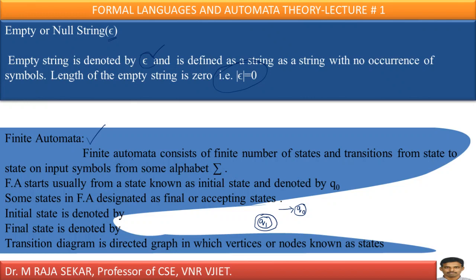Finite automata consists of a finite number of states and transitions from state to state on input symbols from some alphabet — here sigma is the input alphabet. Finite automata starts usually from a state known as the initial state, denoted by Q0. Some states in finite automata are designated as final or accepting states. An arrow pointing to Q0 denotes the initial state, and a double circle denotes a final state. A transition diagram is a directed graph in which vertices or nodes are known as states.